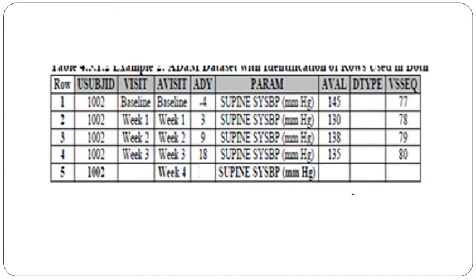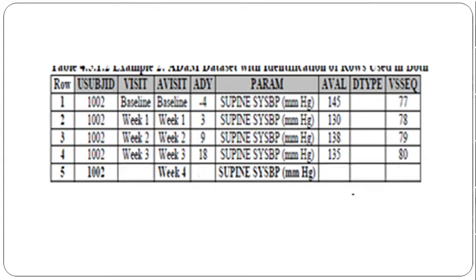What the statistician suggests is to take the last observed value, which belongs to week three, then populate the same AVAL value into week four. Here you can see the AVAL value 135 was populated in week four. We are taking the last observed observation and carrying it forward to the next visit. In the same way, the visit sequence and AVAL value are carry-forwarded.